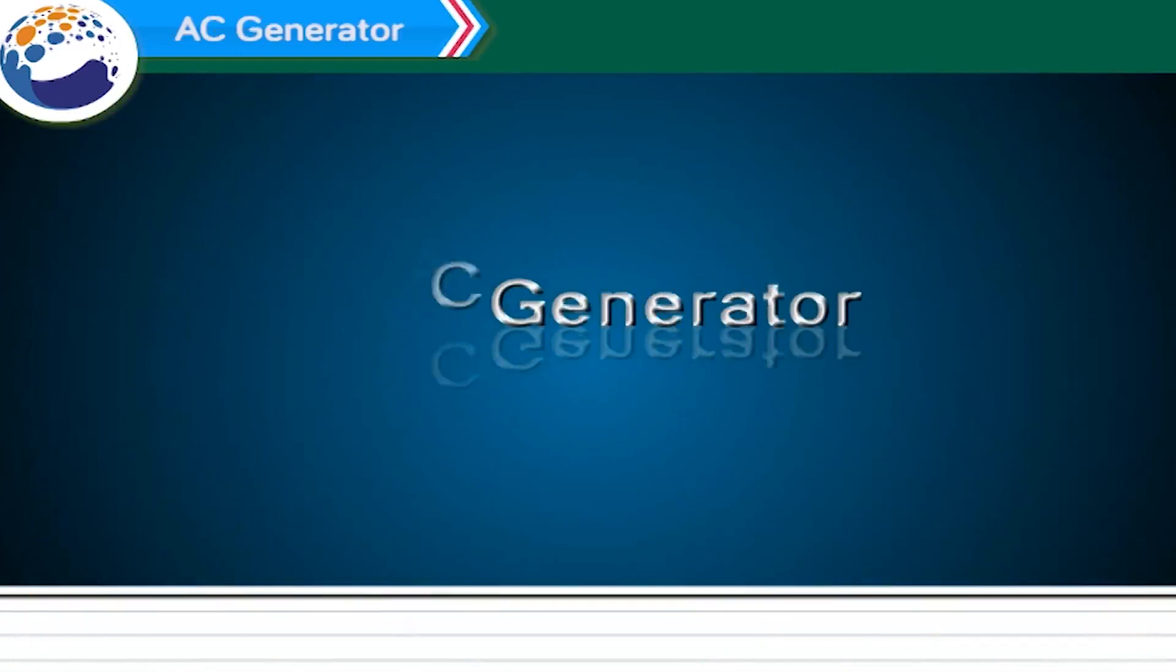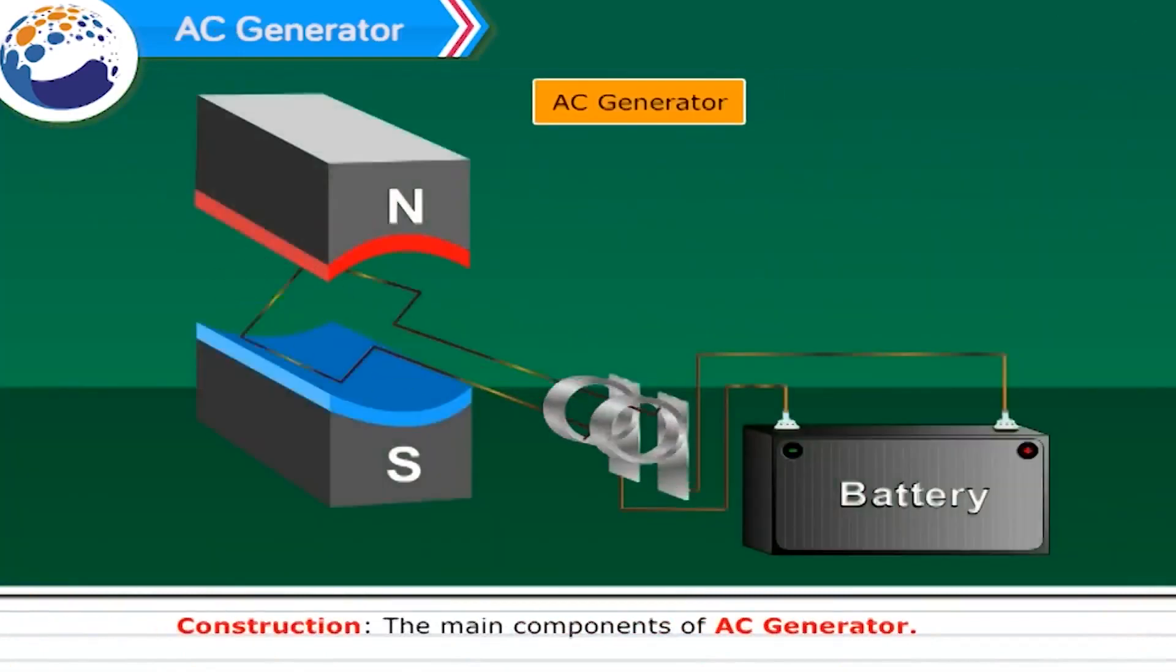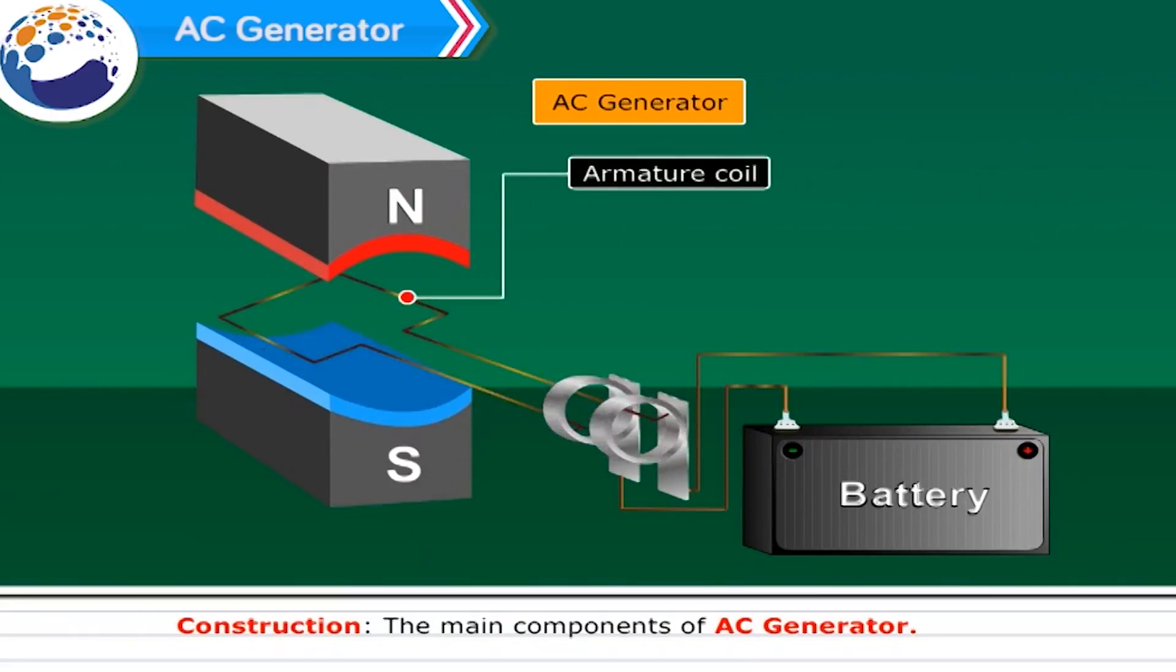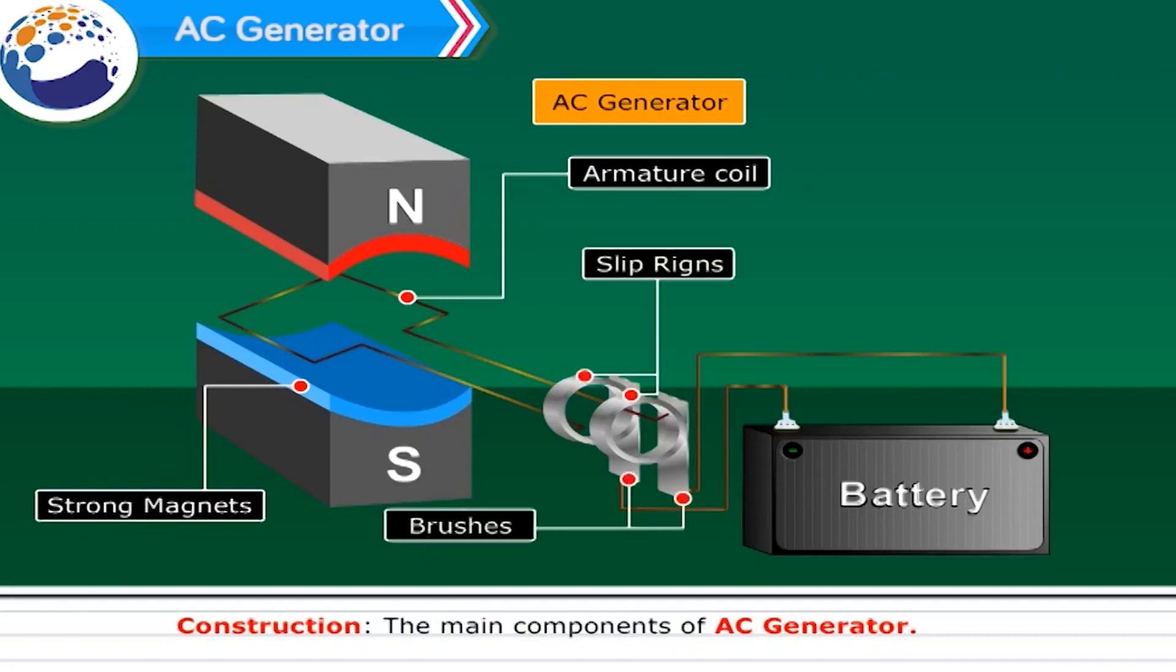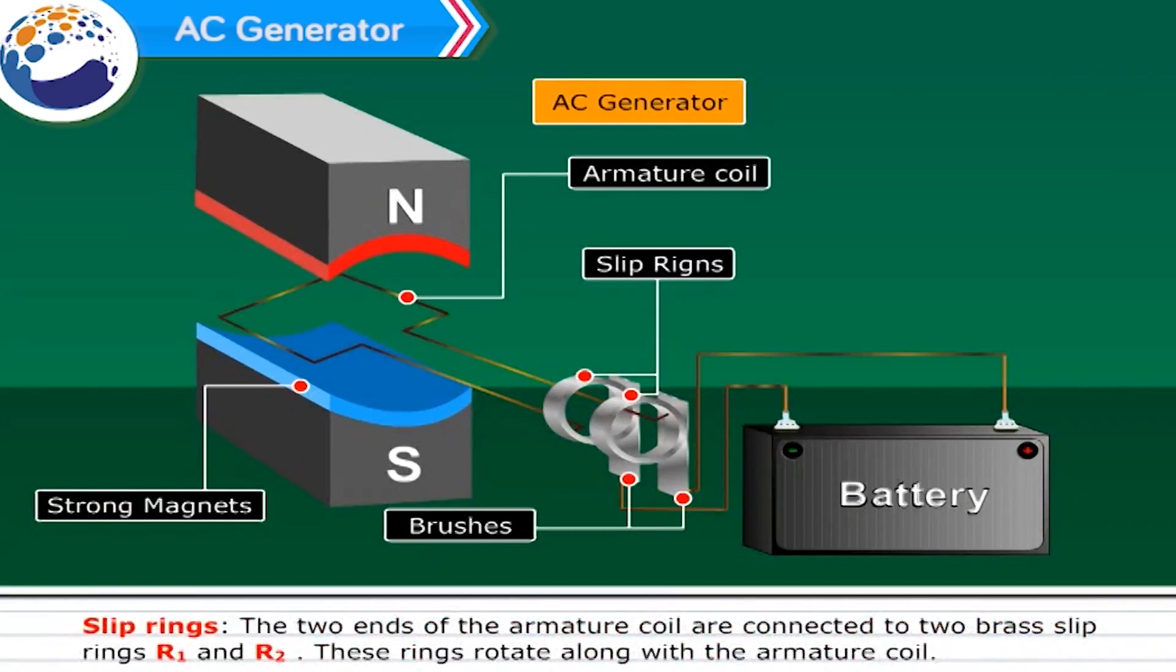AC generator. Construction. The main components of AC generator: Number one, Armature. Number two, Strong magnets. Number three, Slip rings. And number four, Brushes. Armature, strong magnet, and brushes are the same as used for electric motors. Slip rings: The two ends of the armature coil are connected to two brass slip rings R1 and R2. These rings rotate along with the armature coil.